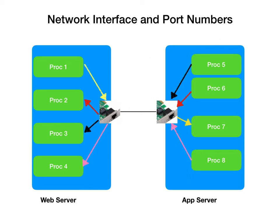When we talk about EC2 instances, or any virtual machines, they usually have one or two network cards — also referred to as Elastic Network Interface in AWS Cloud. You have multiple processes running on a single machine, and they all communicate through this card with other machines in two-way communication.